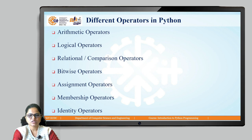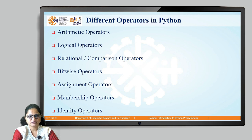These are the different types of operators available in Python. The first one is arithmetic operators, second one is logical operators, then relational or comparison operators, bitwise operators, assignment operators, membership operators, and identity operators. So these are all seven types of operators available in Python.